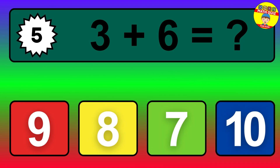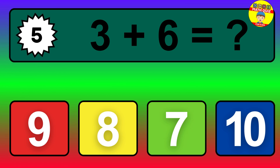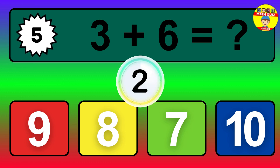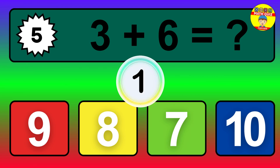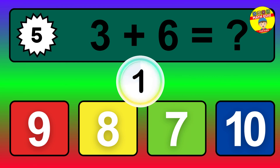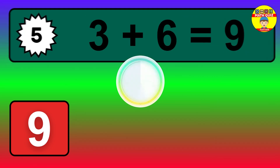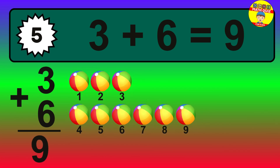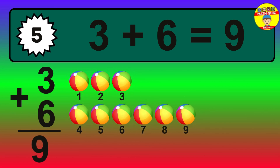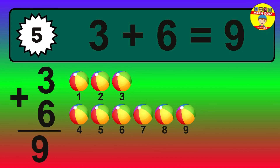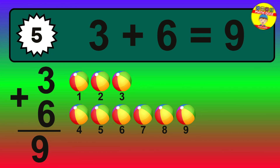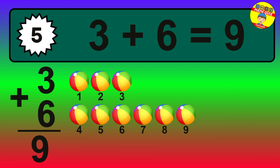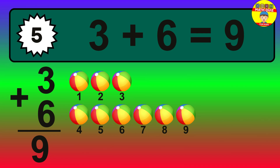Question 5. 3 plus 6 equals what? The answer is 3 plus 6 is 9. Let's count it: 1, 2, 3, 4, 5, 6, 7, 8, 9.